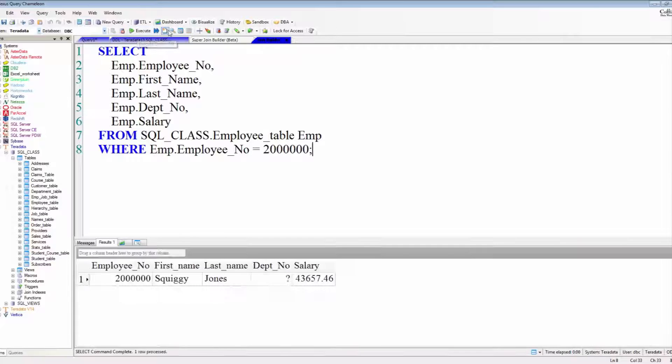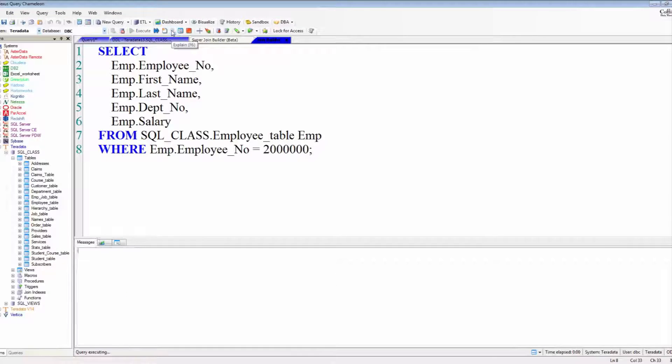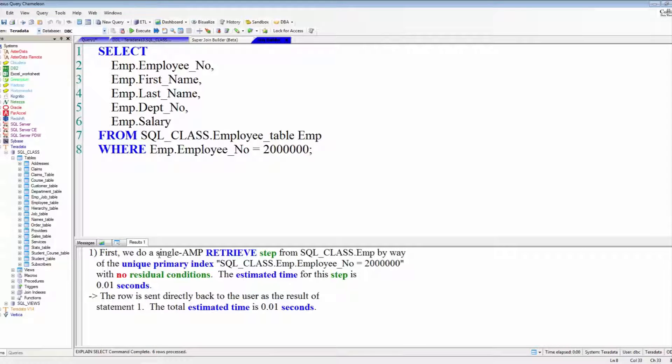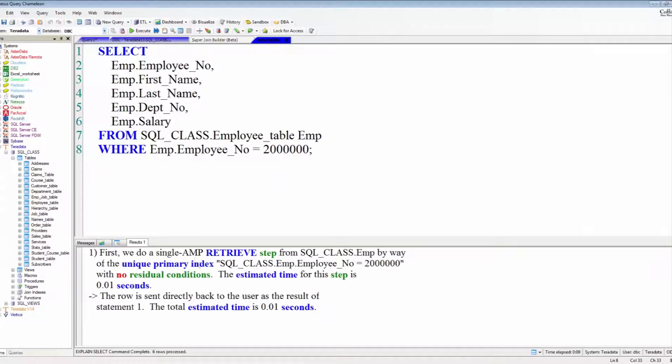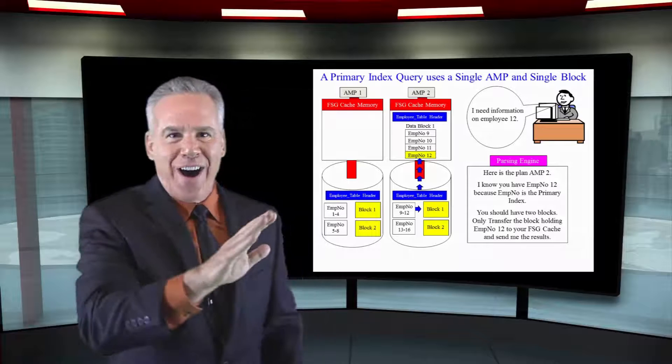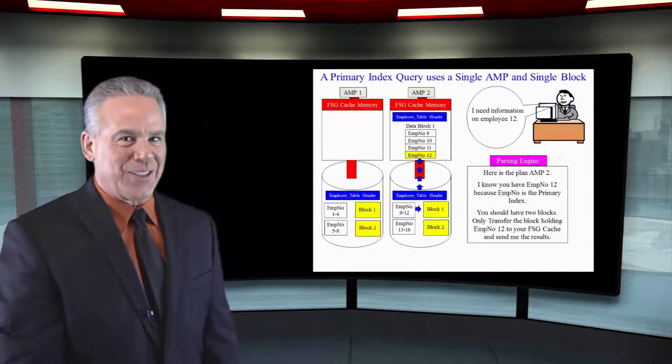So when you use the primary index value in that where clause, two things happen. The parsing engine says that is on amp number two, and then when that goes to that amp that says I've got that in this block only, and so it's going to be a single amp, single block retrieve on all primary index lookups.